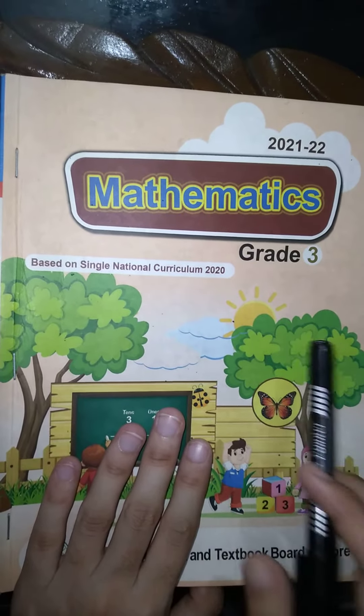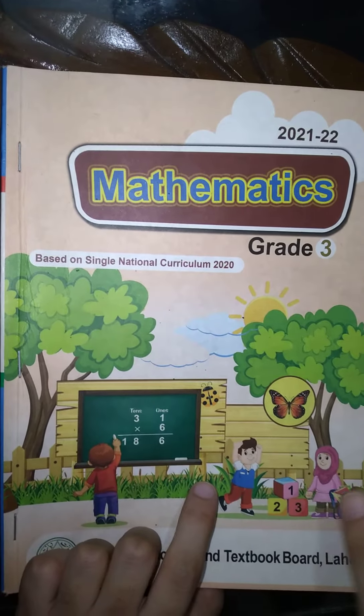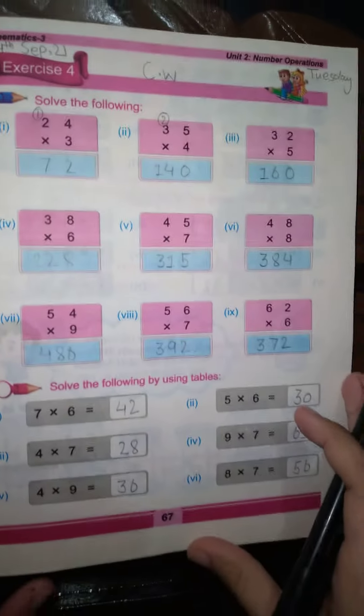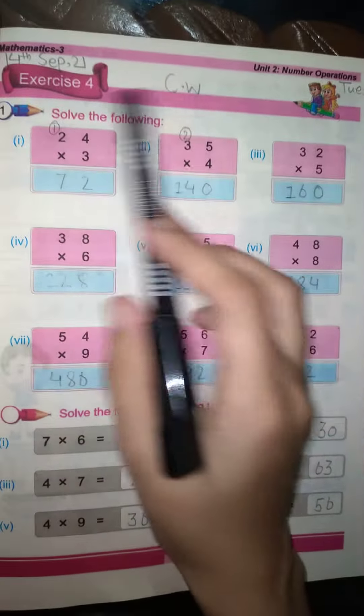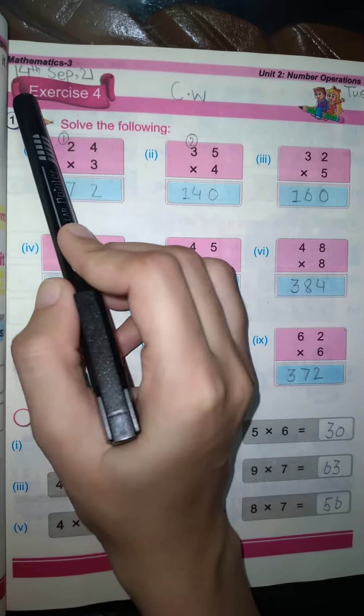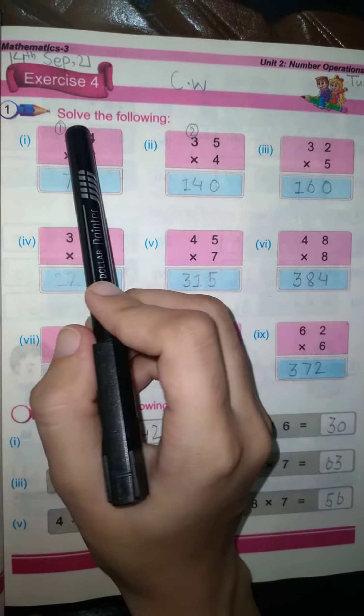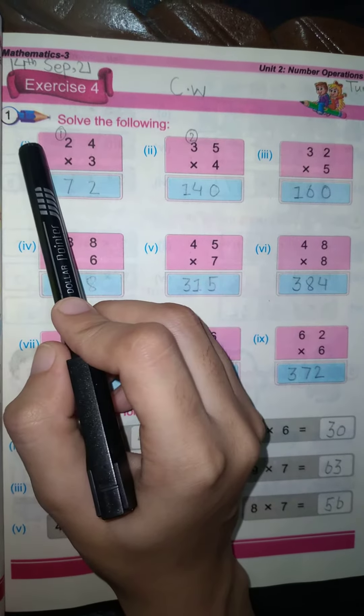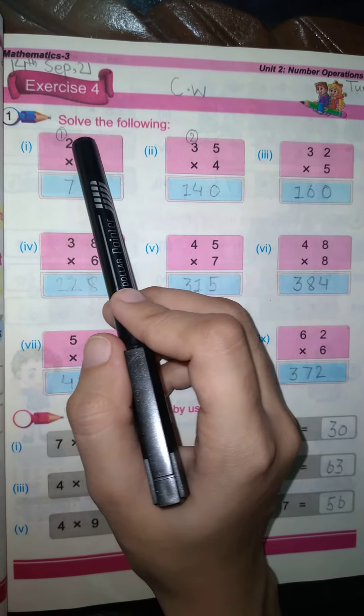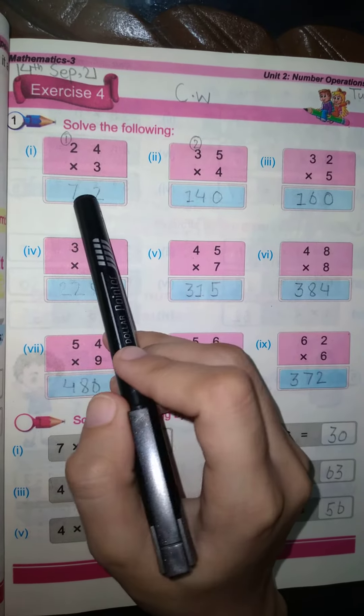Assalamu alaykum students, I hope you all are fine at home. It's your maths lecture. Take out your maths books at page number 61. First of all, write down the date and day on top. Today is 14 September, 21. Classwork, Tuesday. Today we are doing Exercise number 4, question number 1: solve the following.